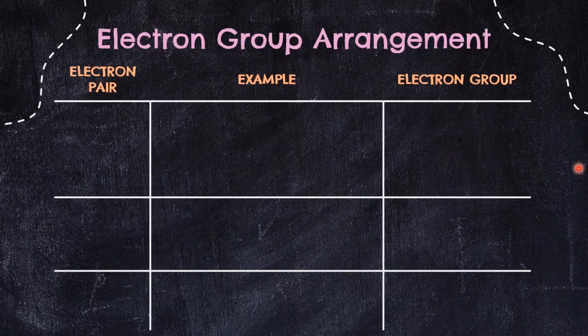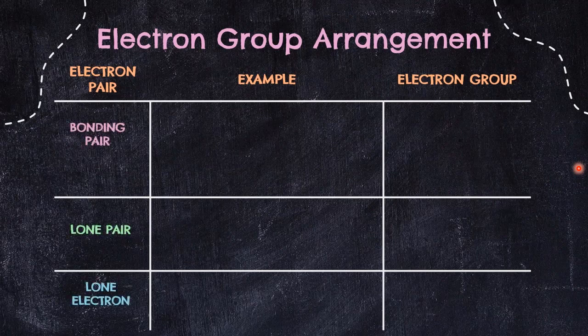Electron group arrangement is determined by the number of electron groups around the central atom. There are three types of electron pairs you need to know: bonding pair, lone pair, and lone electron. When counting the number of groups, each of these is counted as only one. We will look at this using examples.